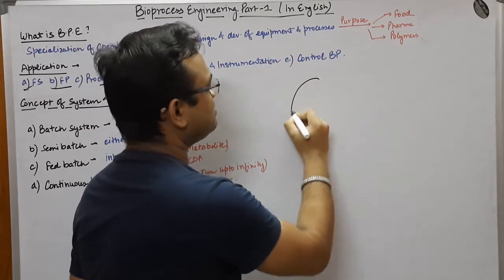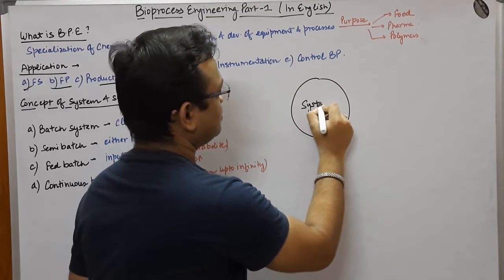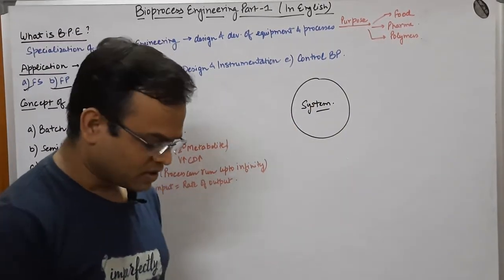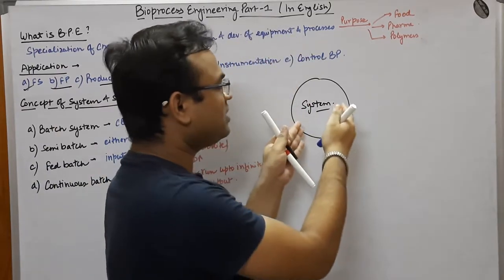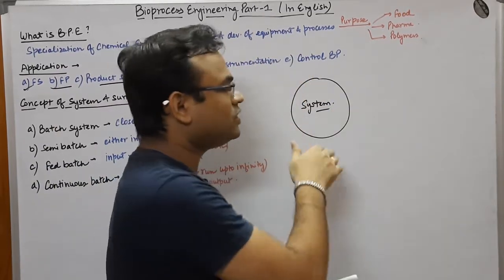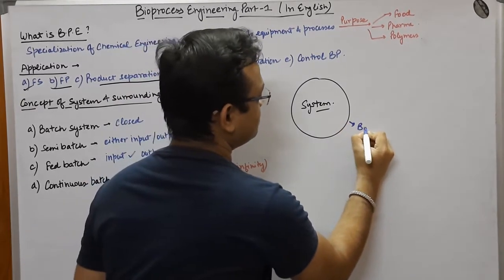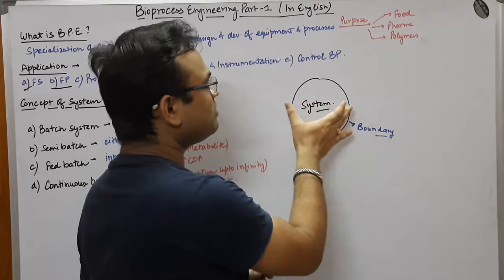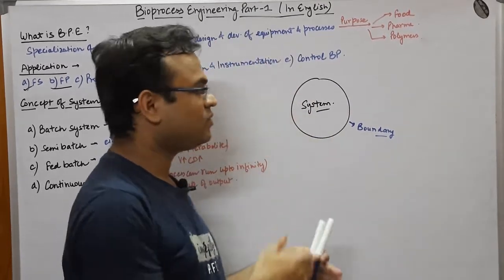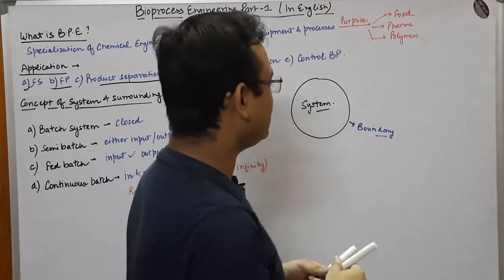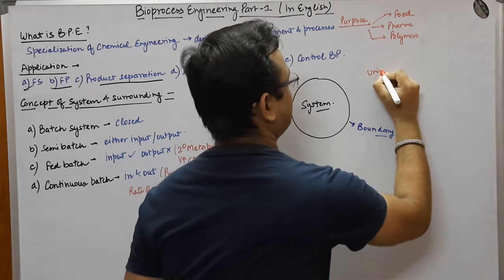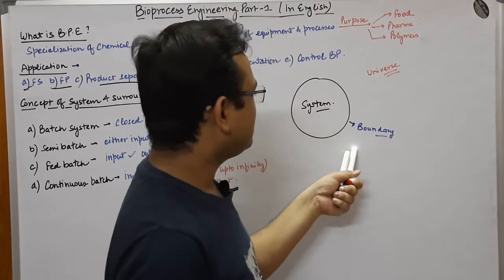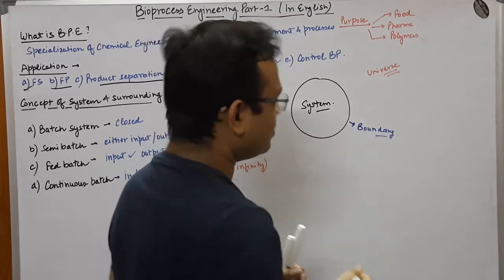Now let us talk about the concept of system and surrounding. What is a system? Whenever you have a particular entity and you surround it with a boundary, whatever is inside the boundary is called the system, and whatever is outside the boundary is called the universe. The boundary separates the system from everything else.